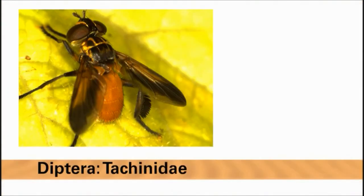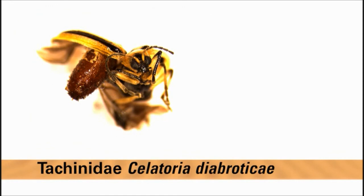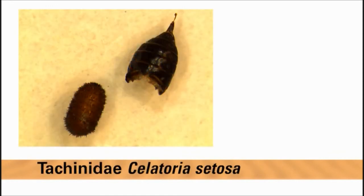There are many species of tachinids, and in addition to the squash bug, their hosts include caterpillars, stink bugs, and cucumber beetles. Cucumber beetles are attacked by the tachinid flies Selitoria diabroticae and Selitoria setosa. These flies emerge from the pest to pupate.